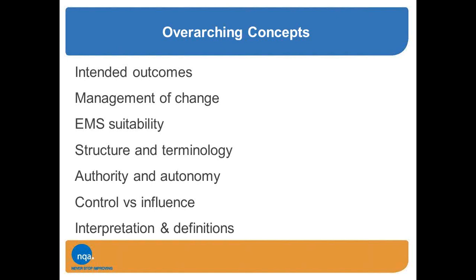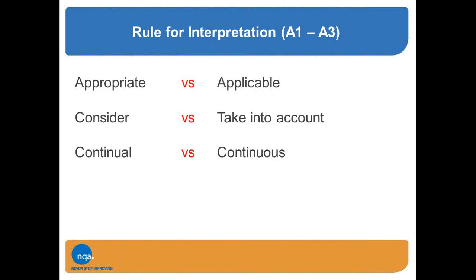We're going to look at a number of definitions and terminologies. The standard gives organisations authority and autonomy — there is a lot more freedom to do things how you want. The standard defines over 30 different terms and concepts. Annex Section A3 clarifies terms we need to understand so we don't misinterpret requirements and so we all have a common approach. I do suggest you take the time to look at them for yourself.